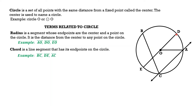We also have line segment DE, from point D which is a point on the circle to point E which is also a point on the circle. The same is true for line segment AC, from point A to point C, both points on the circle. Those are examples of a chord.